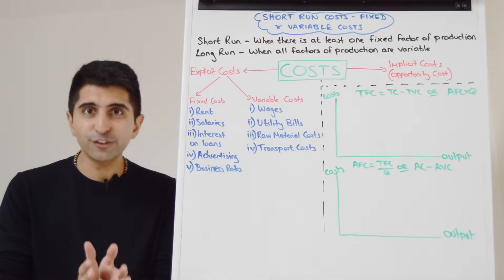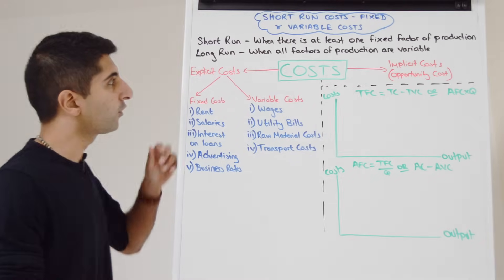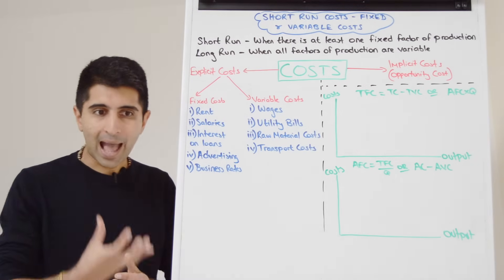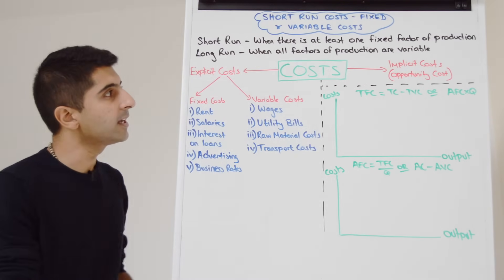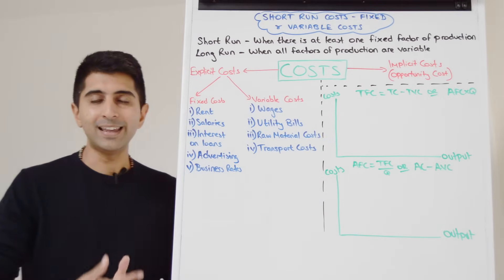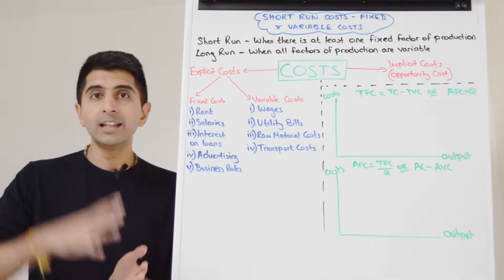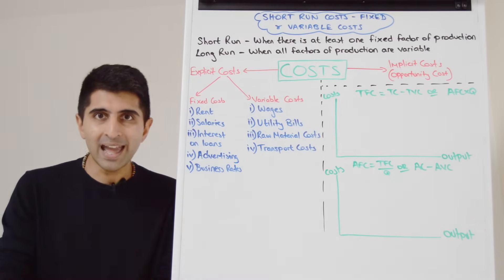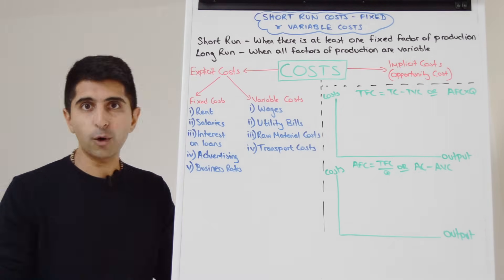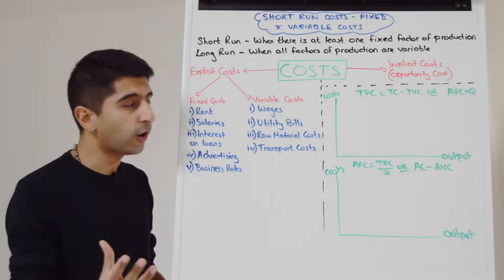Costs are quite unique in economics. There are two different groups of costs. We have our explicit costs — costs that require actual payment — and we have our implicit costs. Implicit costs for a business are just their opportunity cost, and that's always the profit they could have made doing their next best alternative. It doesn't require physical payment, therefore it's implicit, but it is a cost.